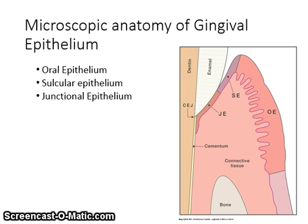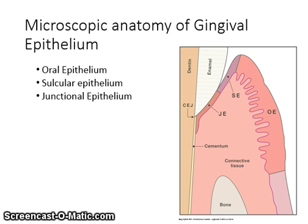On the diagram, OE stands for oral epithelium, which covers the outer surface of the attached gingiva and the free gingiva. SE stands for sulcular epithelium, which lines the sulcus. JE stands for junctional epithelium, which forms the base of the sulcus and joins the gingiva to the tooth (see figure 2.5 on page 27). The free gingiva and attached gingiva are keratinized, while the sulcular epithelium, interdental tissue, and junctional epithelium are not keratinized.